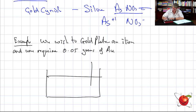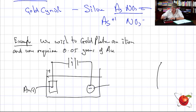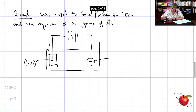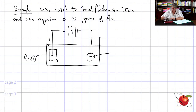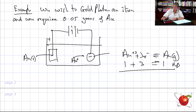Step one in electrochemistry — draw what you're given. The negative side has the object to plate; the positive side has the pure Au(s). On the cathode side: Au3+ (aq) + 3e- → Au(s). One mole of Au3+ plus three moles of electrons gives one mole of Au solid.